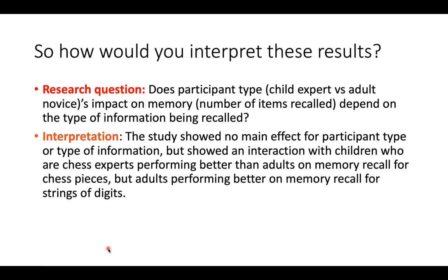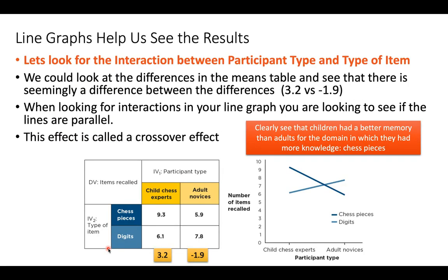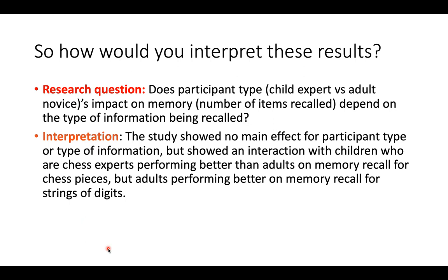To provide a sample interpretation of these results: our research question was, does participant type — child expert versus adult novice — have an impact on memory, and does that depend upon the type of information recalled? Our interpretation might note there was no significant main effect for participant type or information type. But the interaction showed that children who are chess experts perform better than adults when recalling chess pieces, while adults perform better on memory recall when recalling strings of digits.